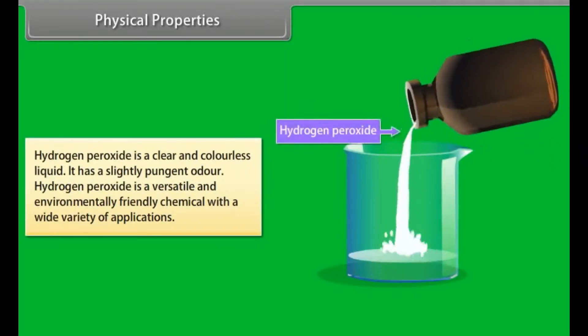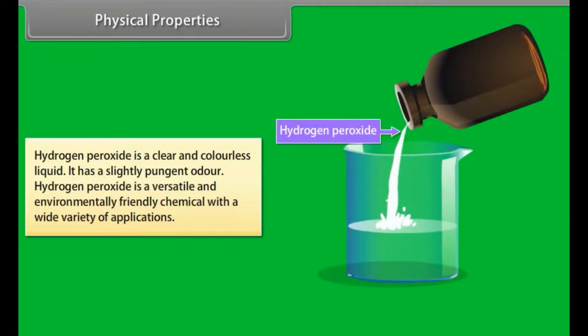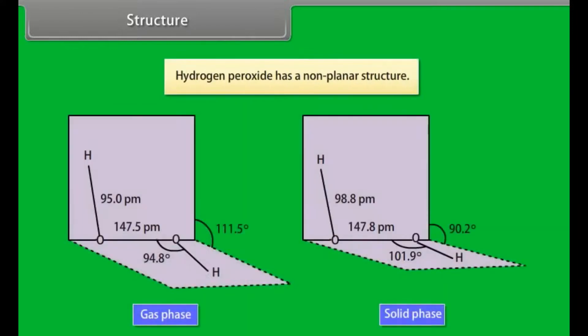Physical properties: Hydrogen peroxide is a clear and colorless liquid. It has a slightly pungent odor. Hydrogen peroxide is a versatile and environmentally friendly chemical with a wide variety of applications. Structure: Hydrogen peroxide has a non-planar structure. In gas phase, dihedral angle is 111.5 degrees. In solid phase at 110 Kelvin, dihedral angle is 90.2 degrees.